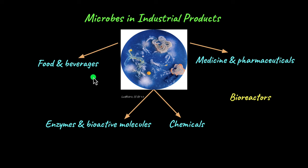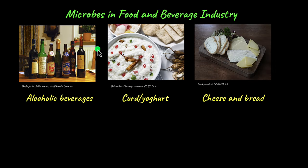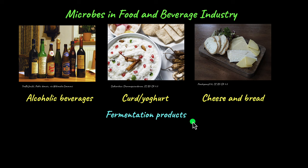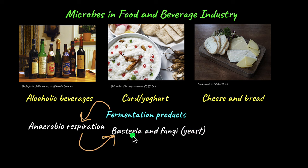First, we'll look at food and beverages produced using microbes. What is common between alcoholic beverages, curd or yogurt, cheese and bread? If you've guessed that these are all fermentation products, you're absolutely right. Fermentation is the process of anaerobic respiration by which bacteria and fungi produce ATP. In the process, they give out ethanol — needed for alcoholic beverages — lactic acid, which produces curd or yogurt, and carbon dioxide, needed to produce cheese and bread.